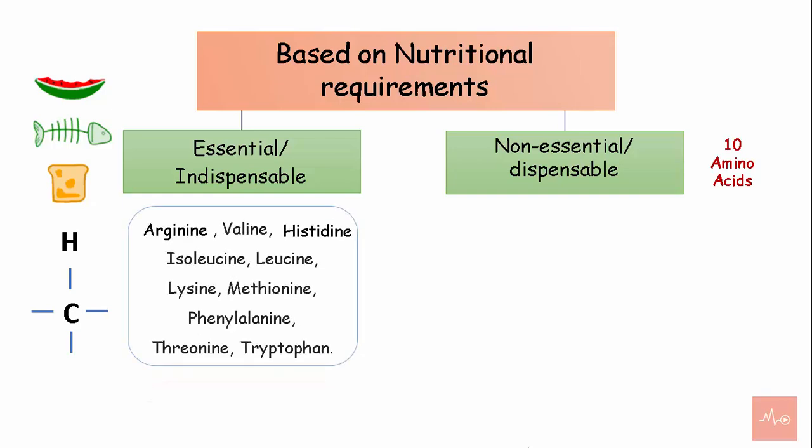Examples of essential amino acids are arginine, valine, histidine, isoleucine, leucine, lysine, methionine, phenylalanine, threonine, and tryptophan. Arginine and histidine are synthesized in adults but not in children, and hence can be termed semi-essential.